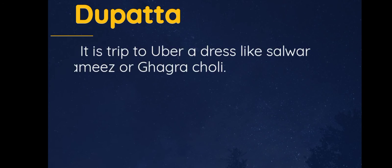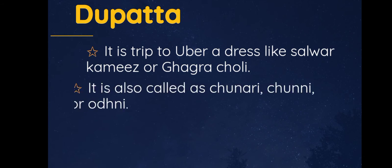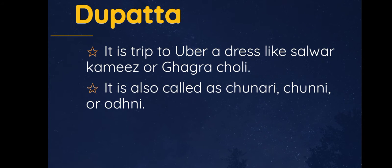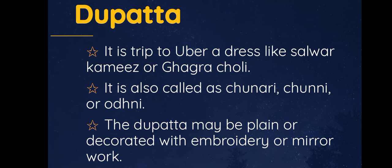Now we are going to see what is a dupatta. It is an unstitched cloth wrapped over a dress like salwar kameez. It is also called chunri, chunni or odni. The dupatta may be plain or decorated with embroidery and mirror work.